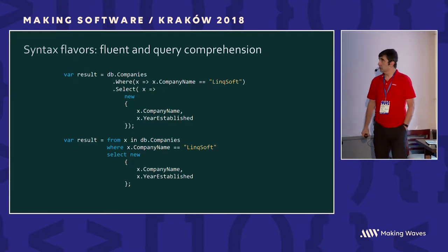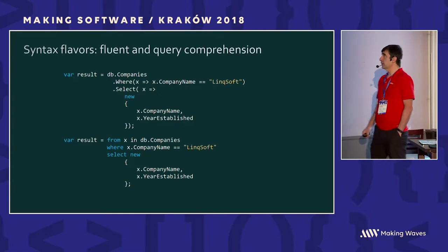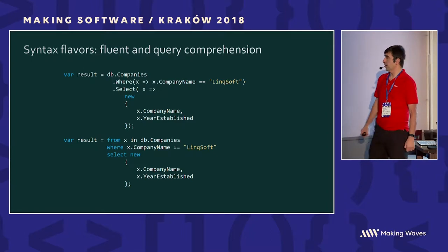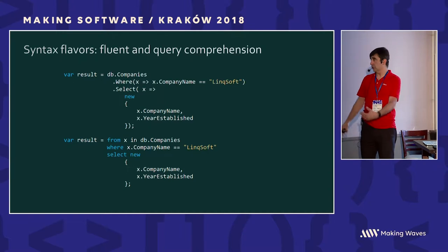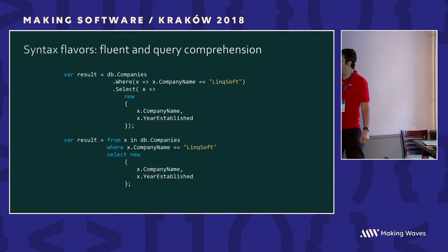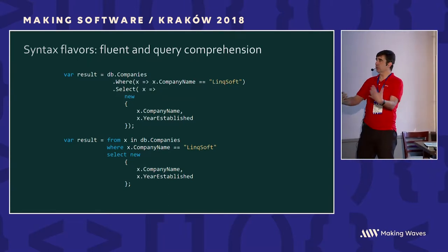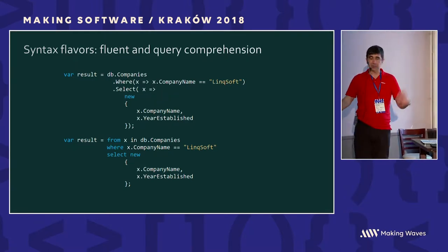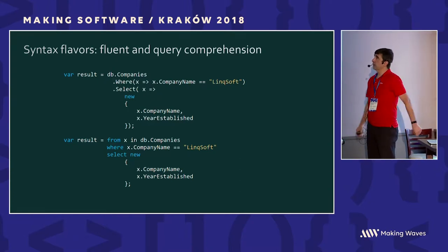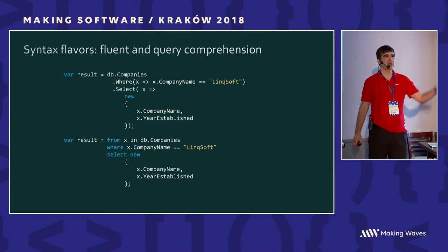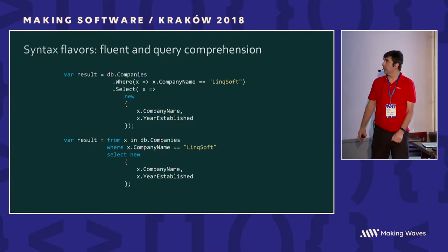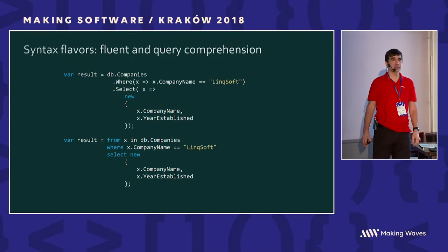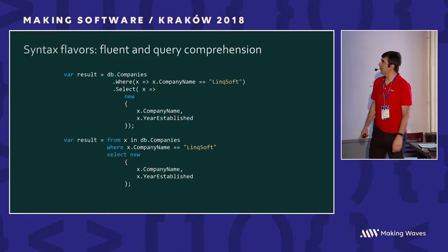When it comes to LINQ, there are two different flavors: the so-called fluent style, where you chain methods, and so-called query comprehension with new SQL-like keywords. These are open to anything that exposes IEnumerable. Who prefers using LINQ with method chaining? The majority. Who prefers query comprehension syntax? Almost no one. Interesting.